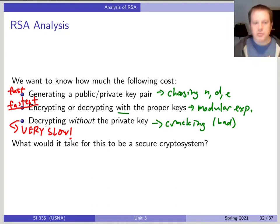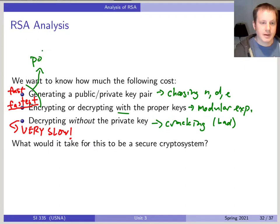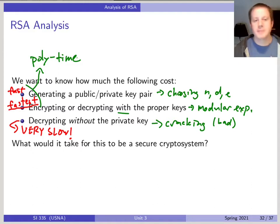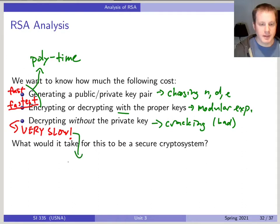Not just a little slower than it costs to encrypt or decrypt, but many orders of magnitude slower. What we really want is that key generation and encryption/decryption are polynomial time. If you remember the Cobham-Edmunds thesis from the beginning of this unit, it says that if something is more than polynomial time it's intractable, and if it's polynomial time it might be tractable. We want cracking — decrypting without the private key — to be exponential time or at least more than polynomial time.